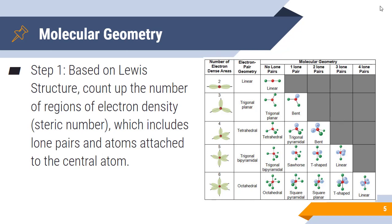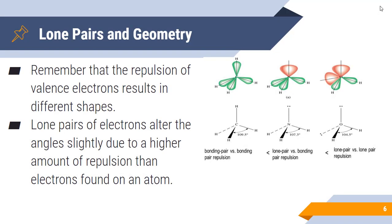You need to think about how these shapes look in three-dimensional space — that's going to be a big difference this year. You are going to have to draw these correctly, and we'll get some practice doing that in class. Remember that the repulsion of valence electrons results in different shapes, and lone pairs of electrons will alter the bond angles slightly due to a higher amount of repulsion than electrons found on an atom.